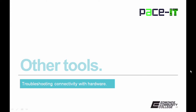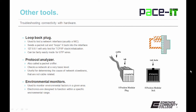Now let's move on to some other tools you can use to troubleshoot connectivity. The first is the loopback plug. This is used to test a network interface, usually on a NIC. It sends a packet out the interface and loops it right back in. This is different than pinging 127.0.0.1, which only tests whether the TCP/IP stack has been initialized — it won't actually test the interface. A loopback plug will. They can be fairly easily made for unshielded twisted pair wiring and are a very handy tool if you suspect a bad NIC.